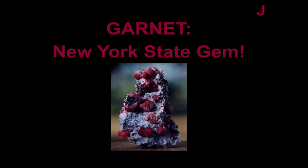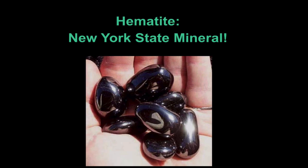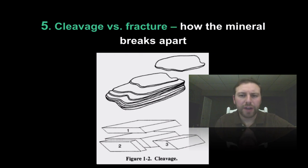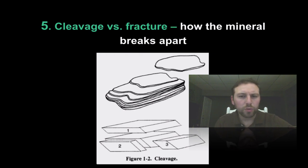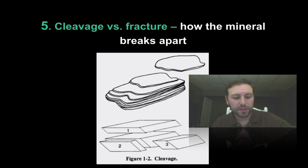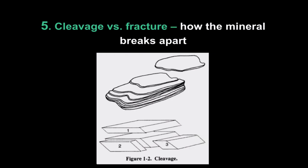Garnet is the New York State gem and hematite is the New York State mineral. Next we're going to go on to cleavage and fracture — how the mineral breaks apart. We'll save this and the rest of the characteristics we look at to identify minerals for our next screencast. Hope you enjoyed it. Bye bye.